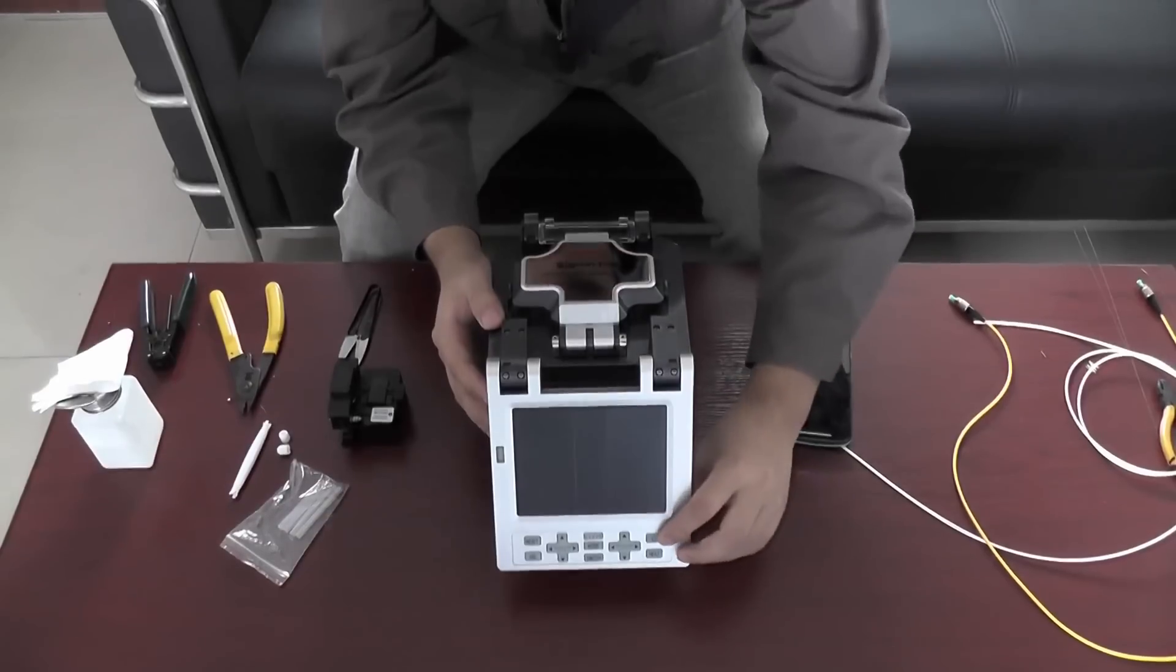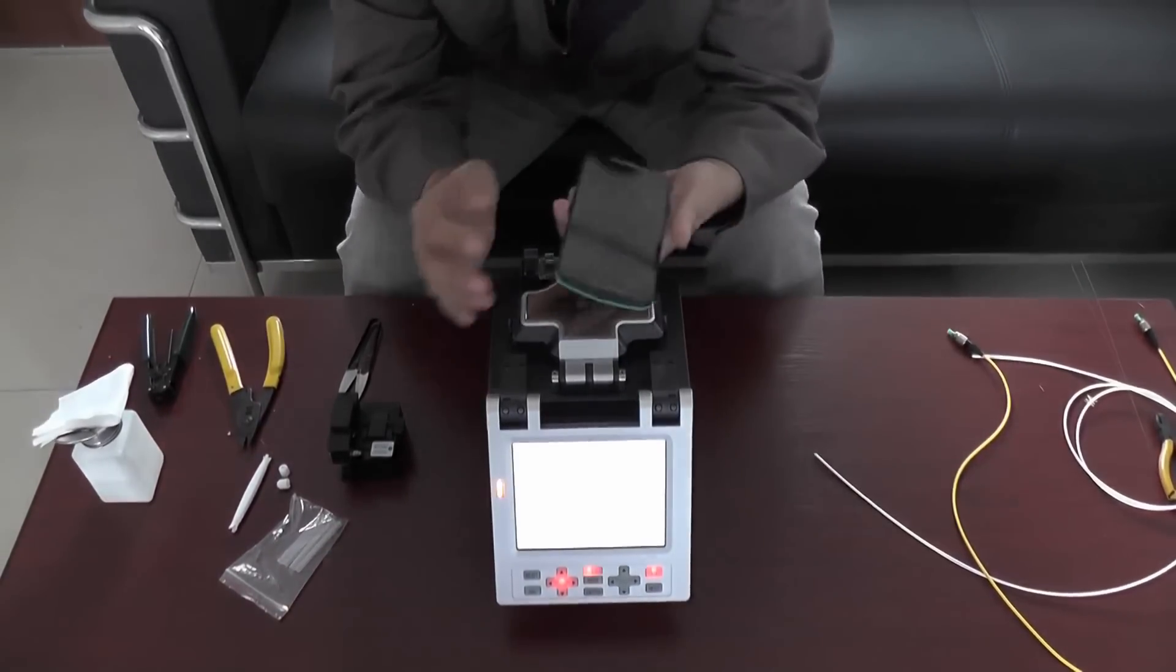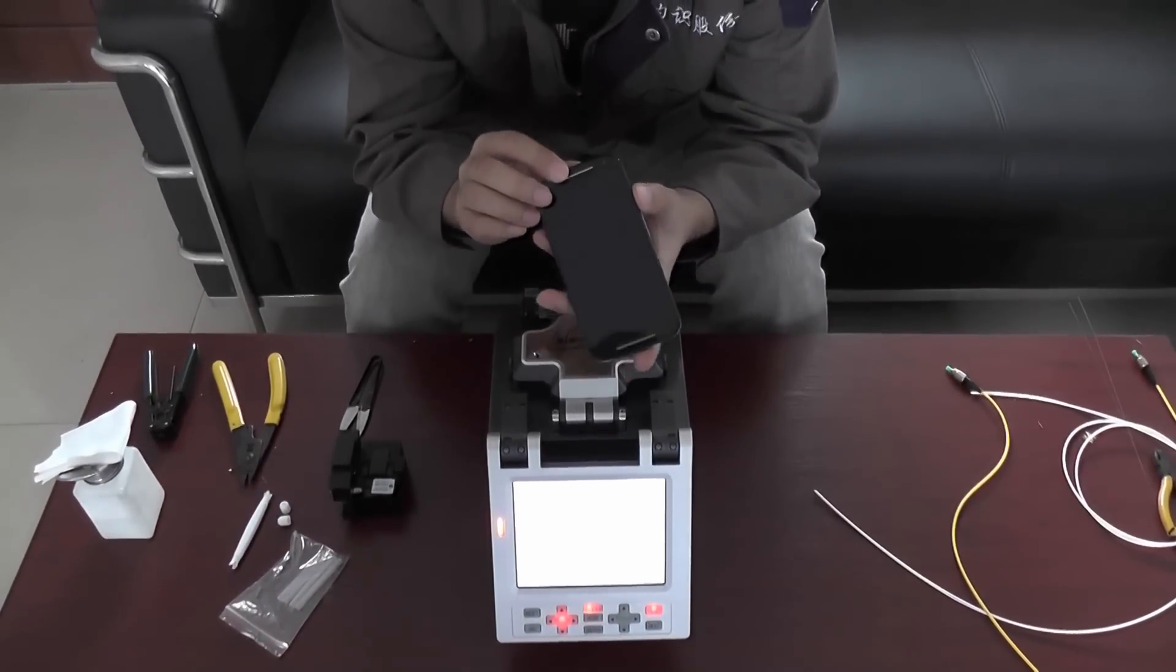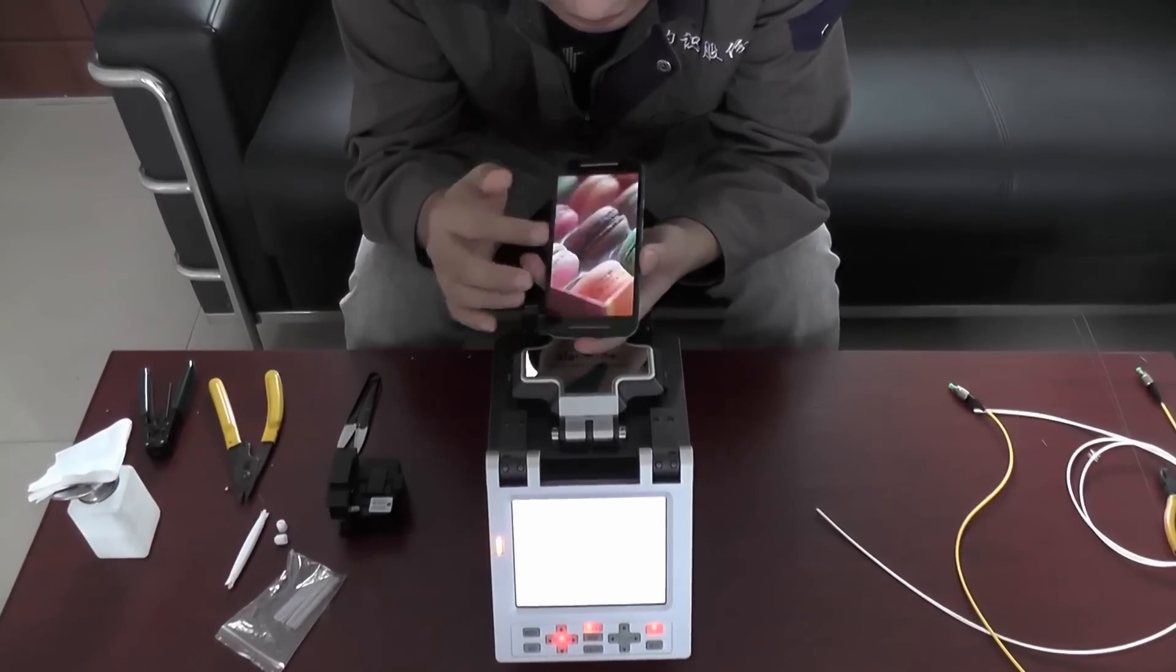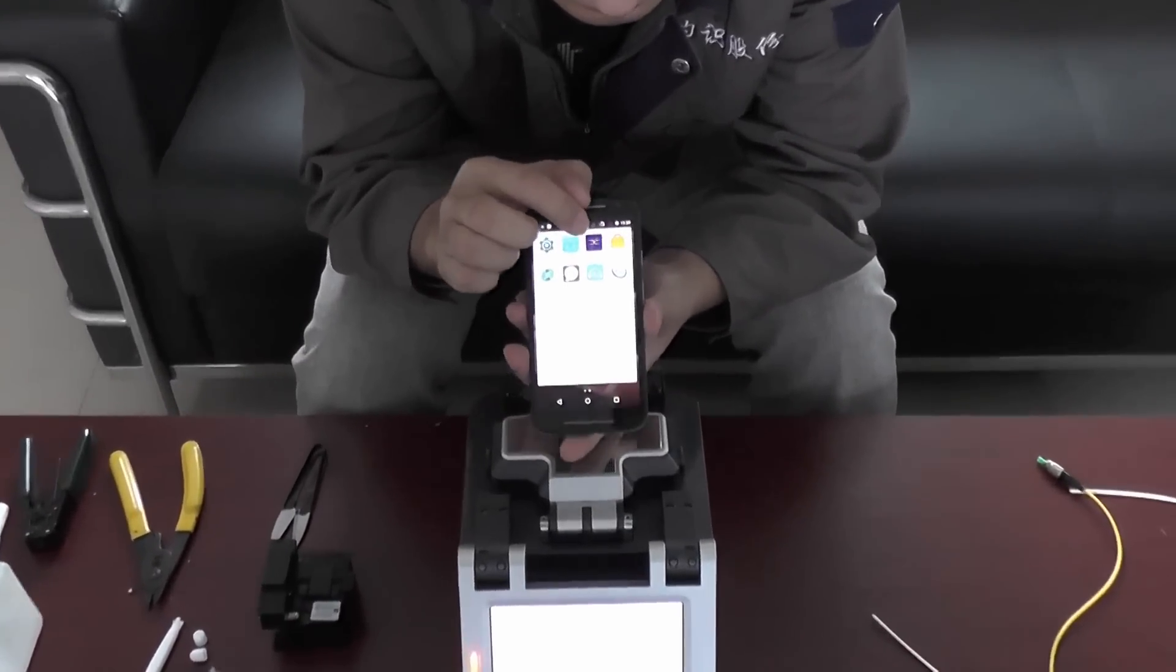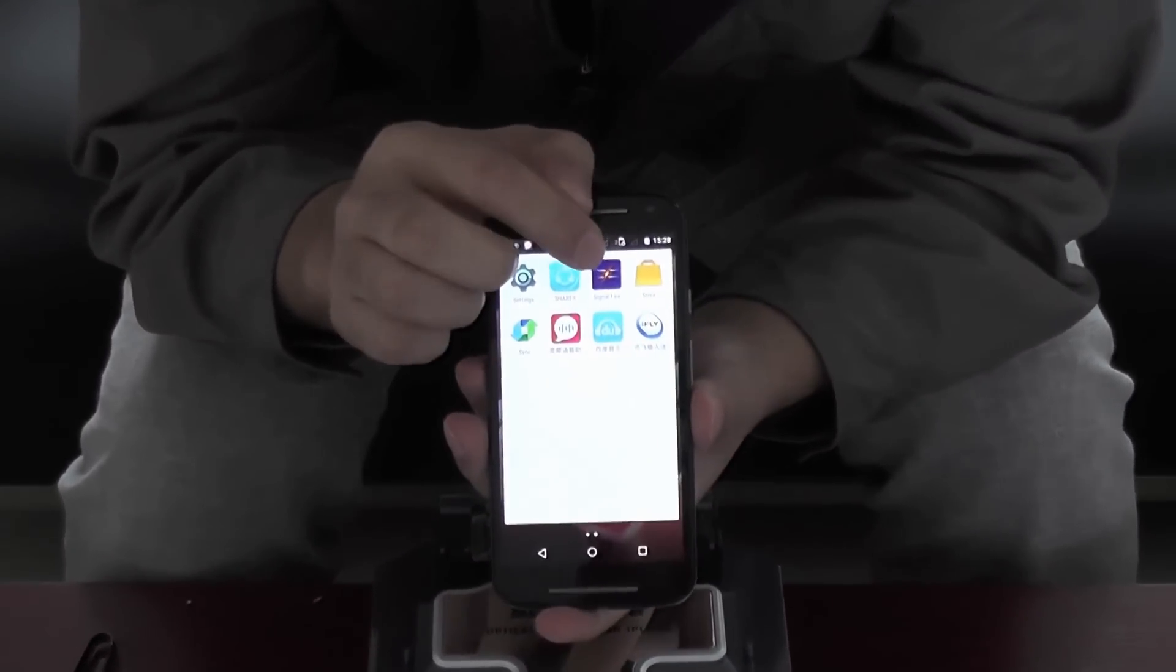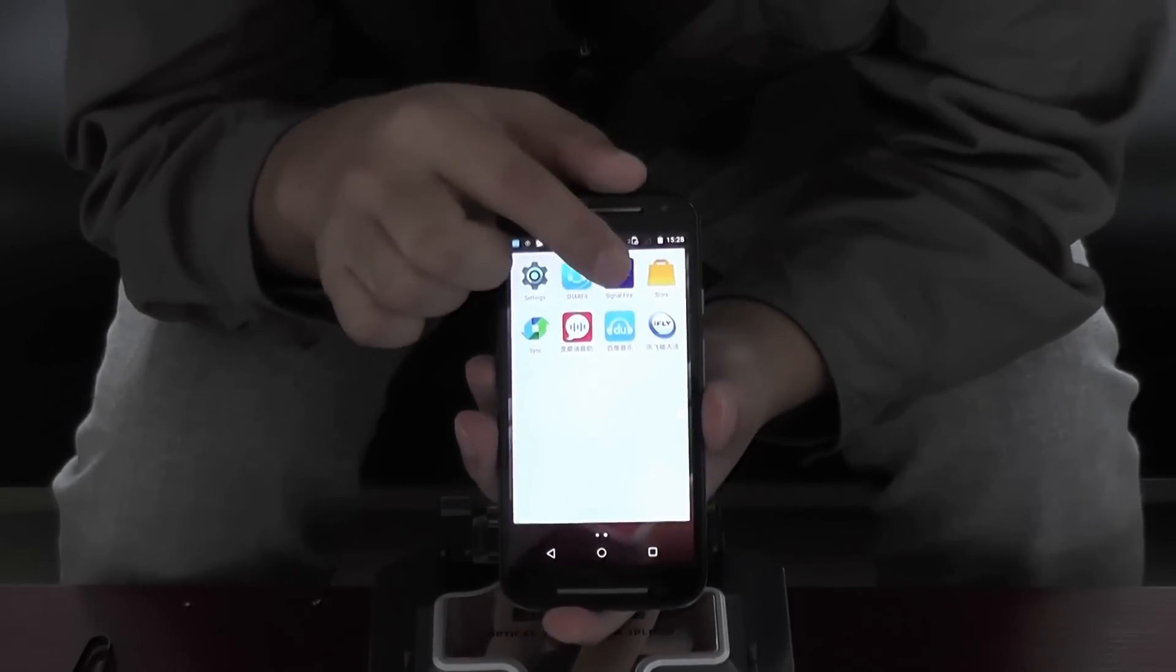Turn on the machine. Now look at this mobile phone. We have an application to control this machine. You see here, signal file. You can download this app from our official website.